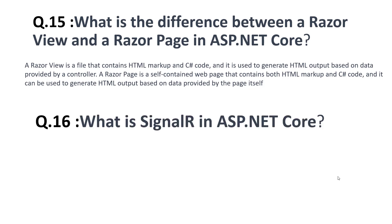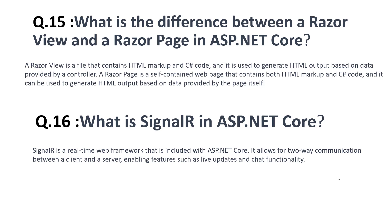The sixteenth question is: what is SignalR in ASP.NET Core? SignalR is a real-time web framework included with ASP.NET Core. It allows for two-way communication between a client and the server, enabling features such as live updates and chat functionality.